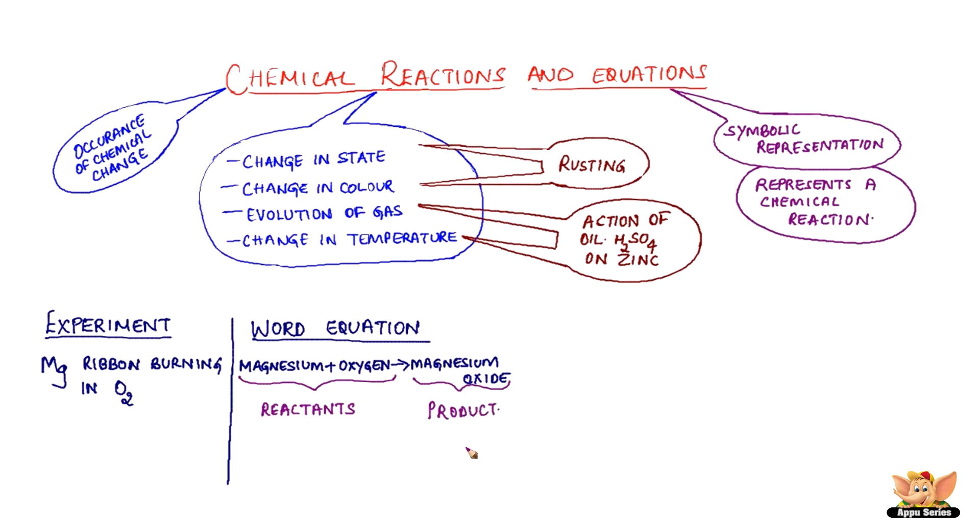The new substance formed during the reaction is the product. This is on the right-hand side. Here, magnesium oxide is the product. There could be more than one product depending upon the chemical reaction.